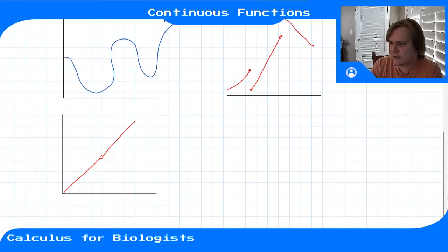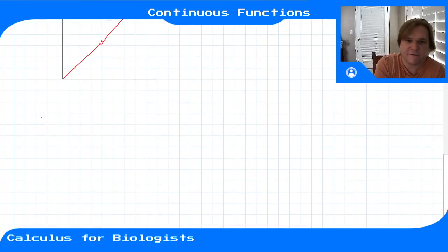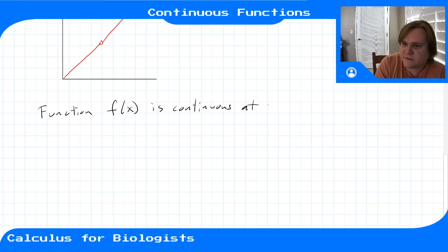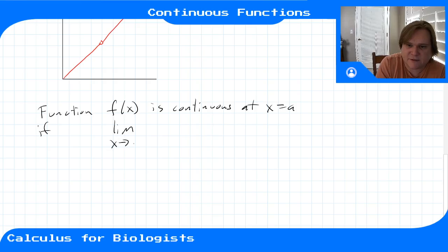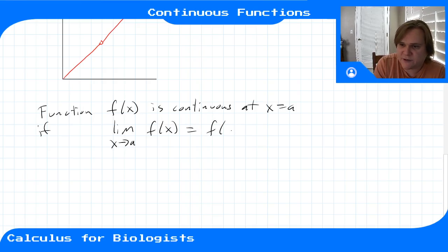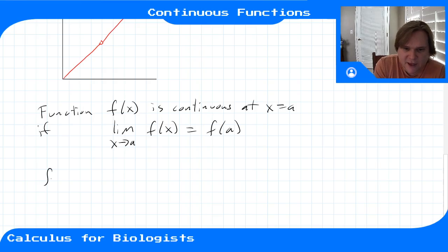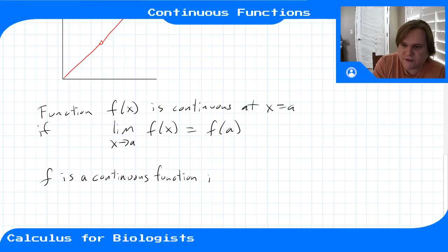More technically, we say that a function f(x) is continuous at a point x equals a if the limit of f(x) as x goes to a is equal to the function value at that point, f(a). That's what it means for a function to be continuous at a point. And f is a continuous function if it is continuous at every point in its domain.